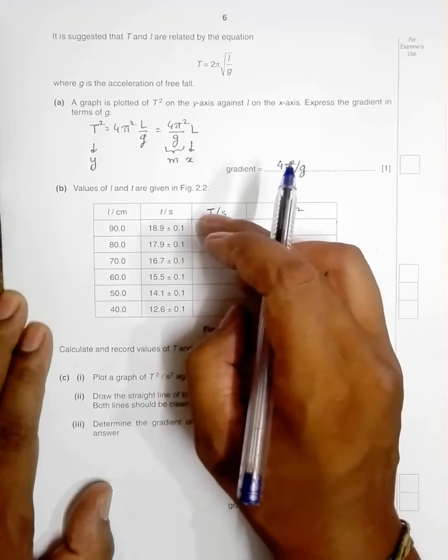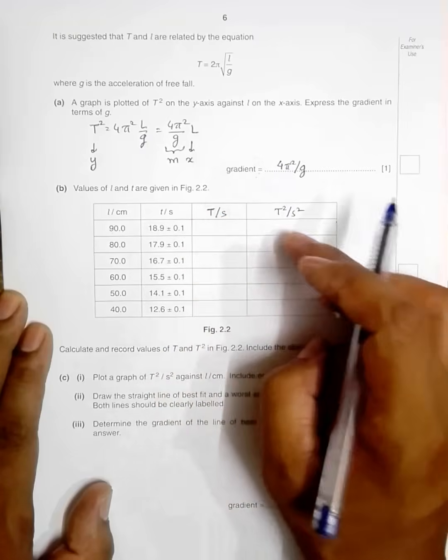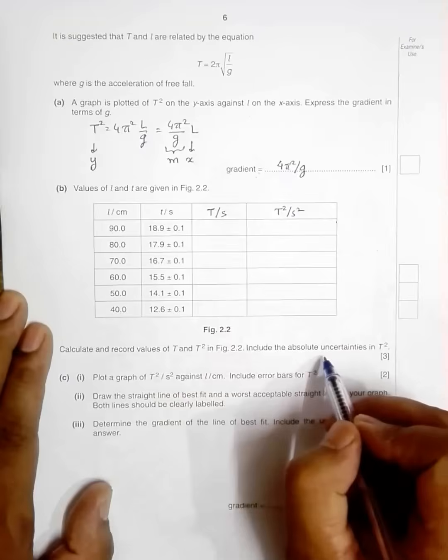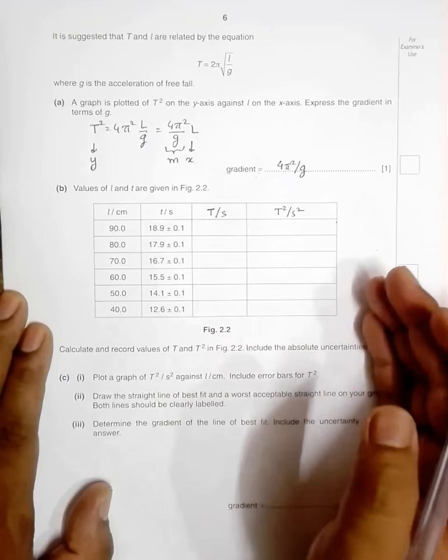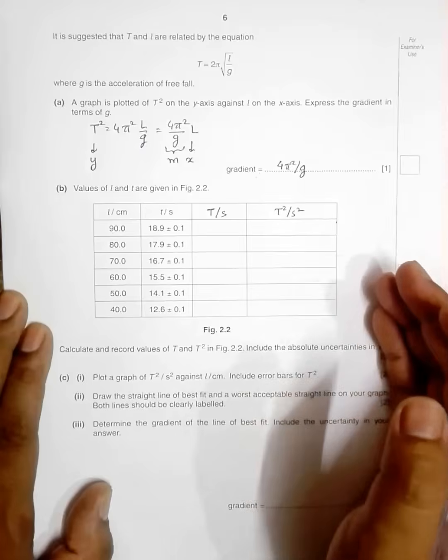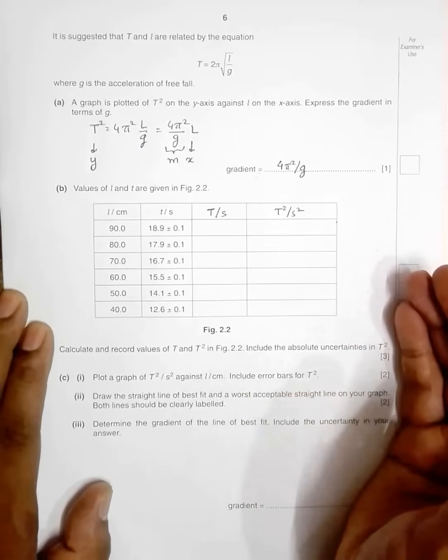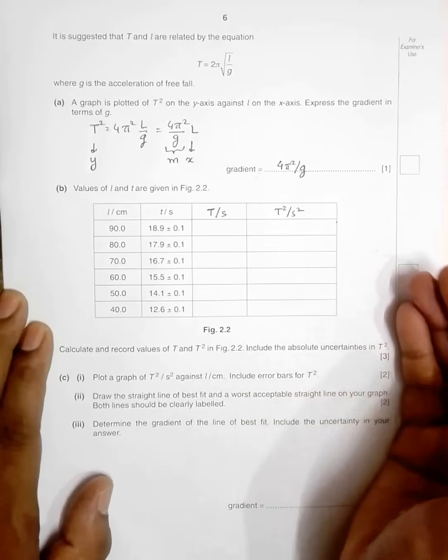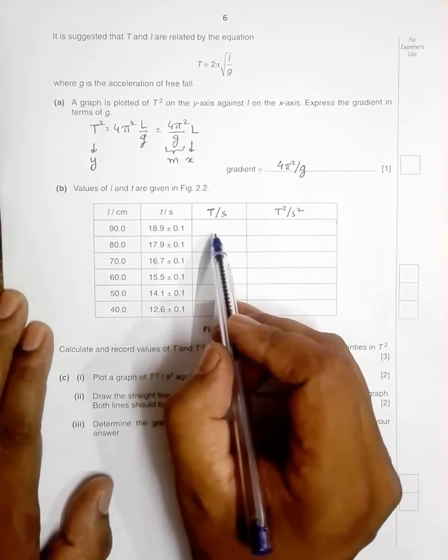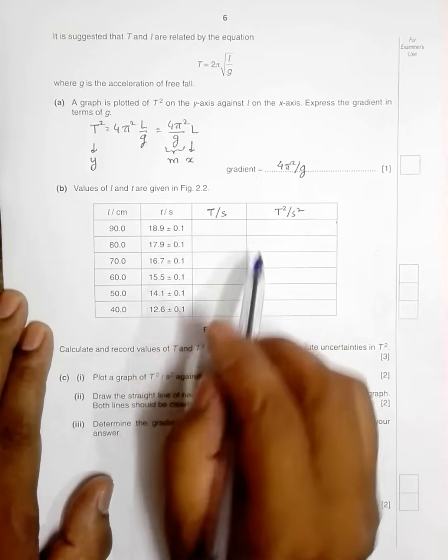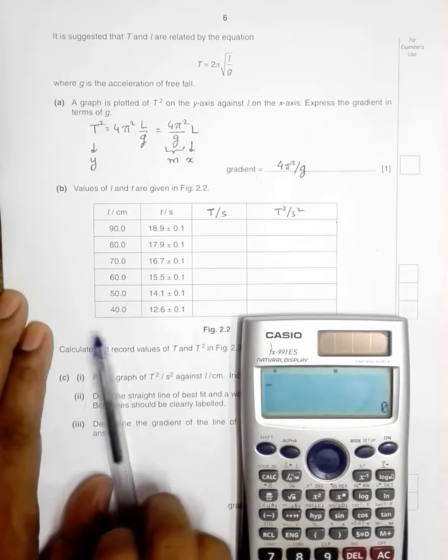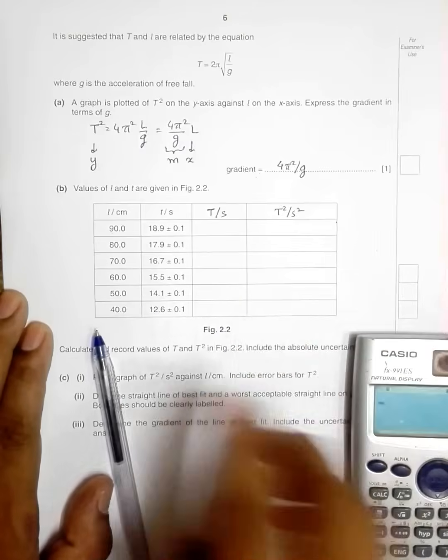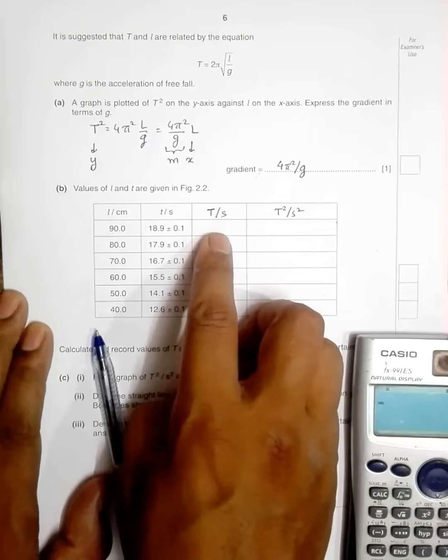We have to record the values of T and T². In T² you have to use absolute uncertainties, so the value that I can write for T² is determined by the value of the uncertainty. But in T it's not the case. In T I can write freely the values.